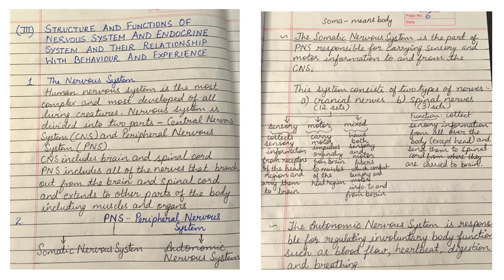The nervous system is the most complex and most developed of all living creatures. It is divided into two parts: the central nervous system (CNS) and the peripheral nervous system (PNS). The CNS includes the brain and spinal cord, while the PNS includes all of the nerves that branch out from the brain and spinal cord to the rest of the body including muscles and organs. The PNS can be further divided into the somatic nervous system and the autonomic nervous system.